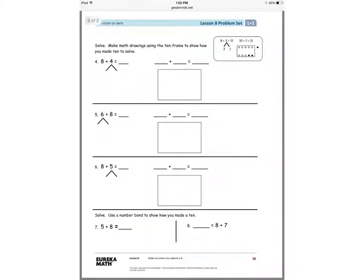If you're done with number 3, you can flip your paper over to the back to complete numbers 4, 5, and 6. Here are the directions for 4, 5, and 6. Solve.